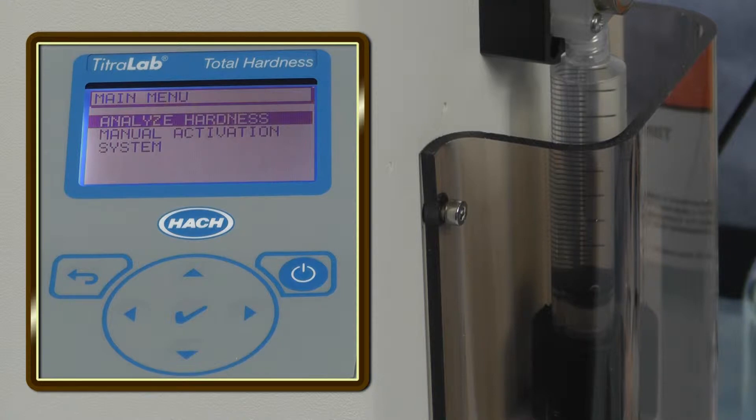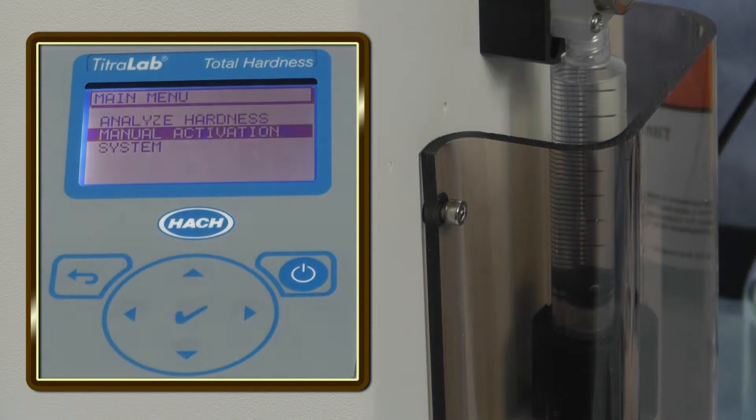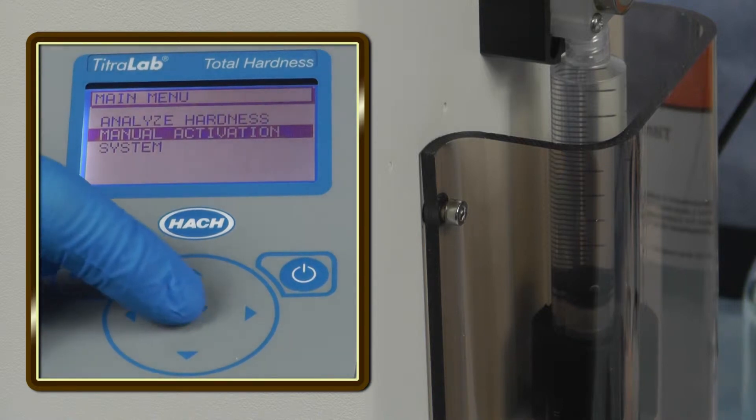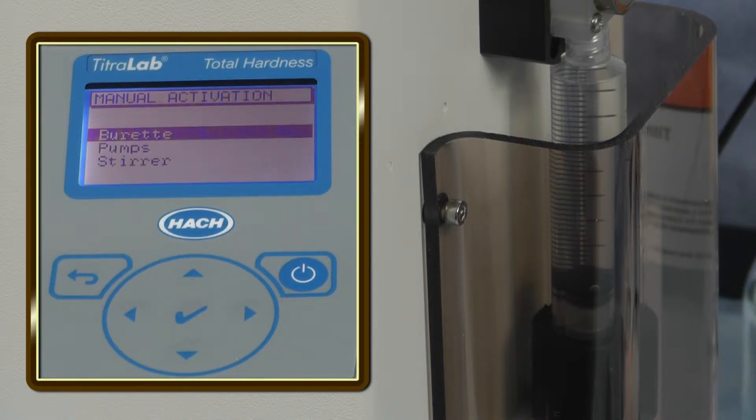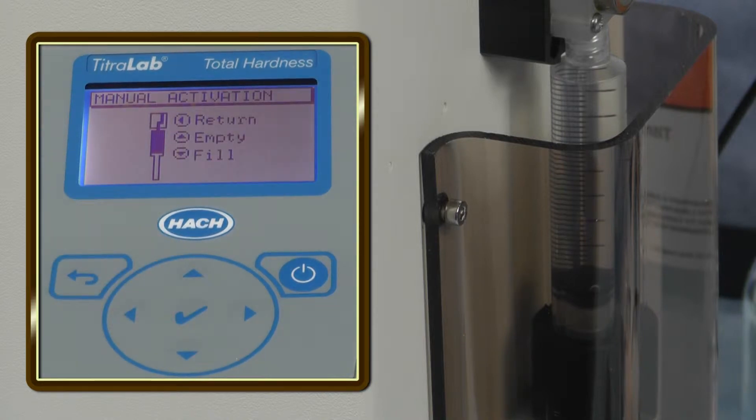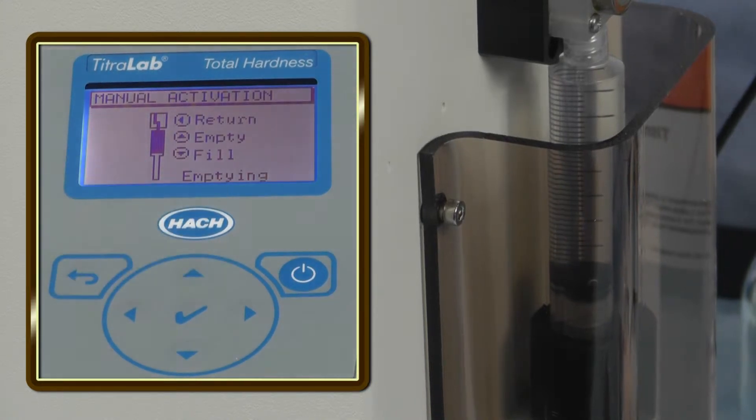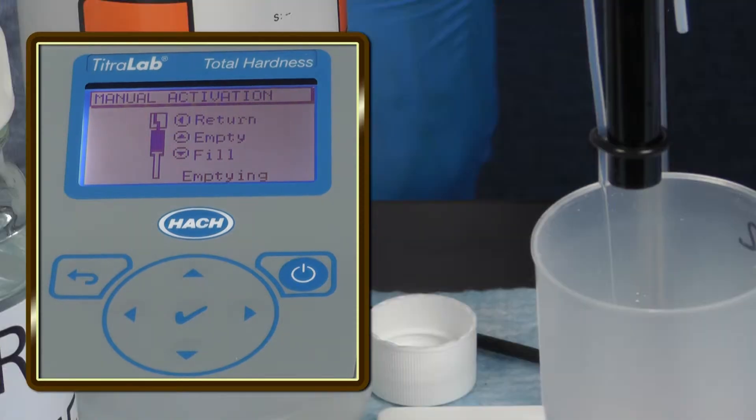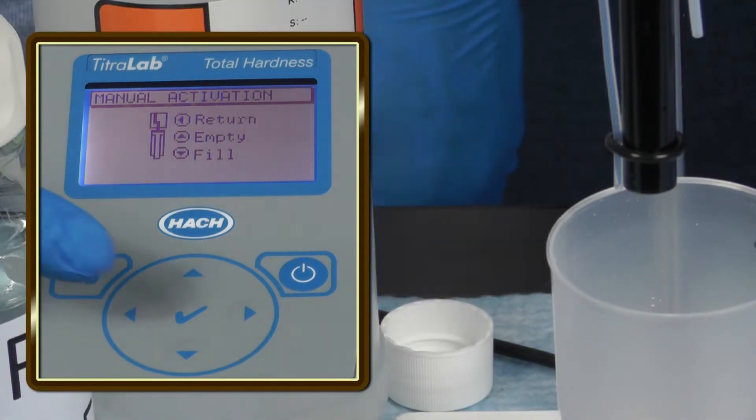On the keypad, scroll to manual activation. Select burette. Make sure there is a waste beaker under the electrode. Press the up key to empty the syringe and the down key to fill the syringe. Do this several times until all the air is removed from the syringe and the tubes.